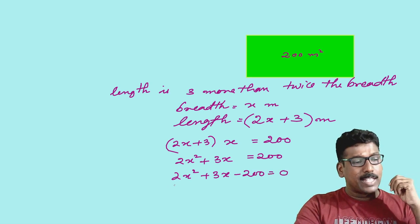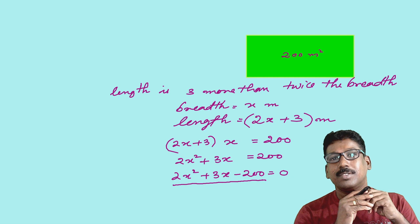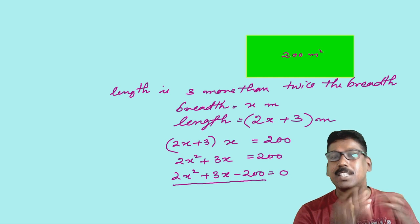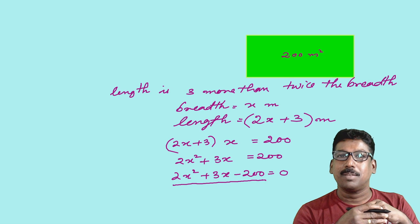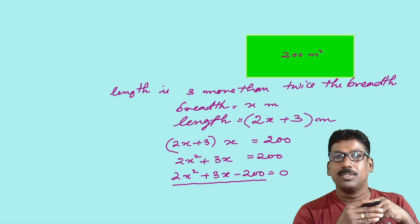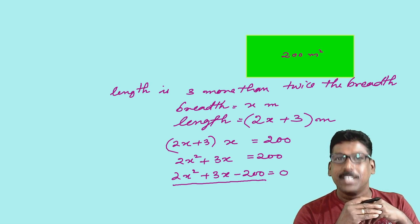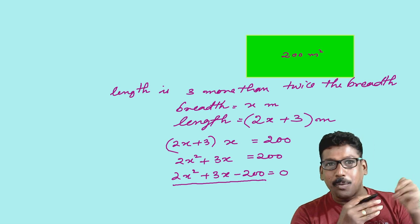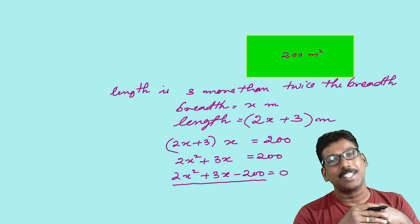Here, look at the LHS. LHS is 2x squared plus 3x minus 200. This is familiar to you — you have seen this in the chapter on polynomials. Yes, it is a quadratic polynomial, and it is equal to 0. Now this becomes a quadratic equation. That means, a quadratic polynomial equated to 0 gives you a quadratic equation.